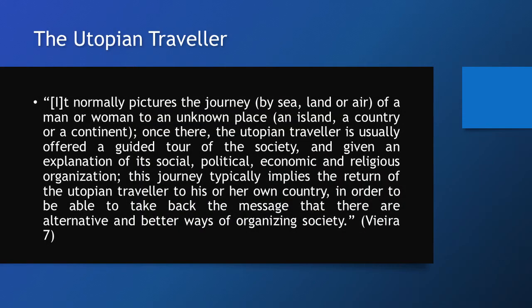The traveller in More's text, Raphael Nonsenso — quite a telling name — proceeds to tell More about the Republic of Utopia, a reference to Plato's Republic no doubt, which he has allegedly visited himself. According to Vieira, a utopian narrative often follows a similar template, sometimes with a similar frame narrative included. It normally pictures the journey by sea, land or air of a man or woman to an unknown place — an island, a country or a continent. Once there, the utopian traveller is usually offered a guided tour of the society and given an explanation of its social, political, economic and religious organisation. This journey typically implies the return of the utopian traveller to his or her own country in order to take back the message that there are alternative and better ways of organising society.